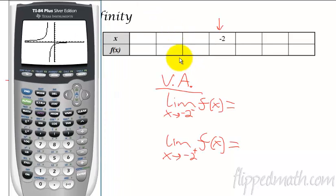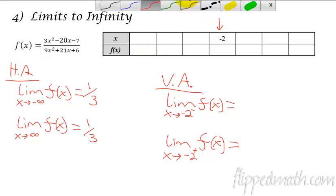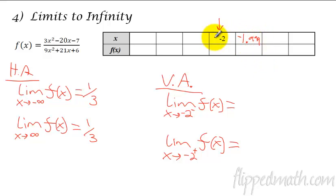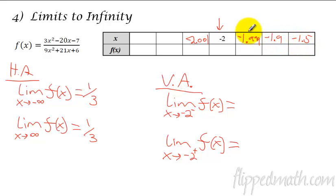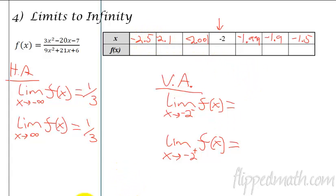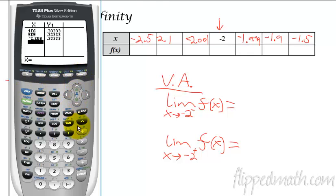The next thing we're going to do is get the vertical asymptotes by plugging in numbers to this table — numbers that are pretty close to negative 2. So on the right side, let's do negative 1.999, and on this side negative 2.001. We can also do negative 1.9 and negative 1.5, or negative 2.1 and negative 2.5. What you'll be graded on is if you're showing that you're getting closer and actually getting really close to that negative 2. Grab that calculator, plug those in to the table ask, and I'll plug those in now.